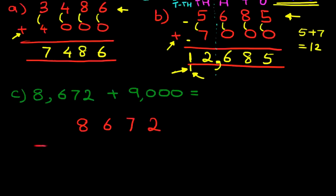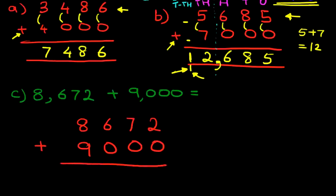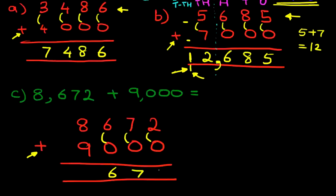Nice neat columns. We write plus nine thousand — that's nine, zero, zero, zero. We're not going to label the columns this time; we're just going to go ahead and do the addition. We've got two plus zero, seven plus zero, six plus zero — so we can just write those in. They do not change.